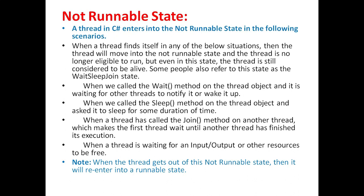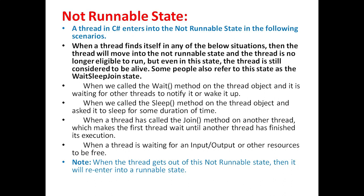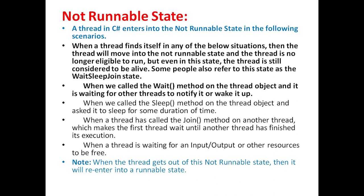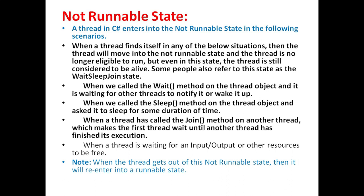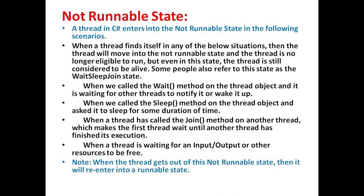Next is not runnable state. A thread in C# enters into the not runnable state in the following scenarios: when the thread finds itself in any one of these situations, it will move into the not runnable state and is no longer eligible to run, but it is still considered to be alive. Some people also refer to this state as the wait, sleep, join state. The situations are: when we call the Wait method on the thread object and it is waiting for other threads to notify it; when we call the Sleep method and ask it to sleep for some duration; when a thread has called the Join method on another thread, making the first thread wait until the other thread finishes; and when a thread is waiting for I/O or other resources to be free. When the thread gets out of its not runnable state, it will re-enter into the runnable state.